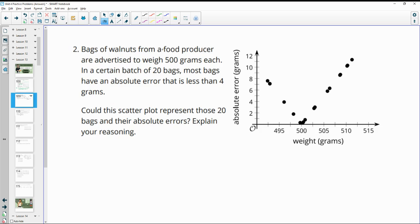Number 2, bags of walnuts from a food producer are advertised to weigh 500 grams each. In a certain batch of 20 bags, most bags have an absolute error less than 4. Could this scatterplot represent those 20 bags and their absolute errors?